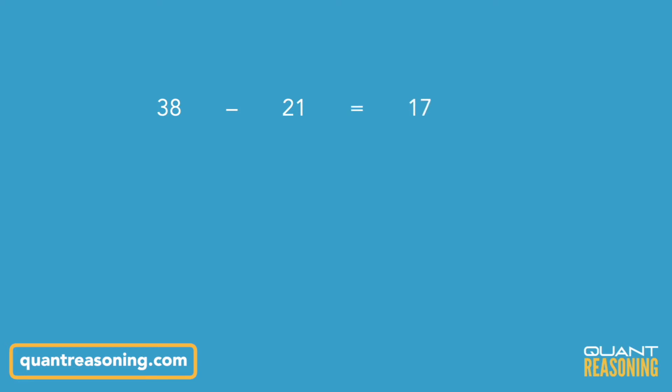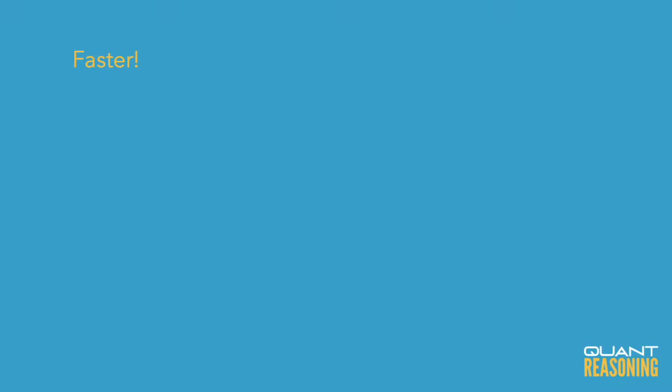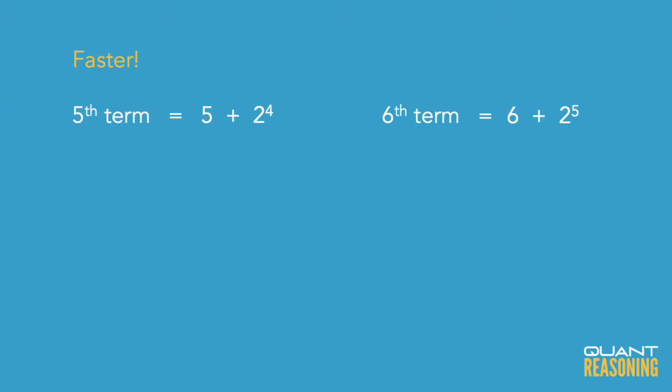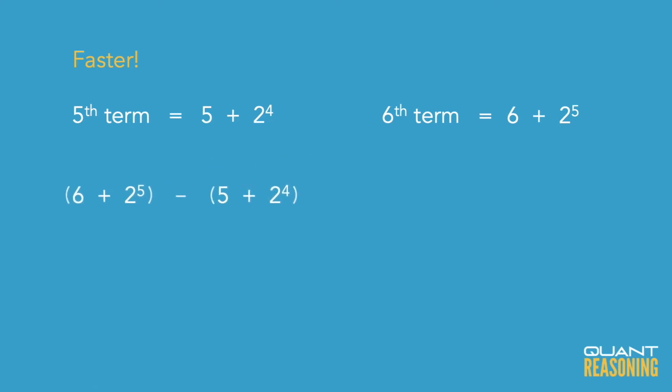The quicker way to solve this is to say the fifth term is 5 plus 2 to the 4th, and the sixth term is 6 plus 2 to the 5th. Comparing the first parts — the 5 and the 6 — the sixth term is 1 more.